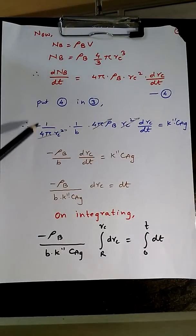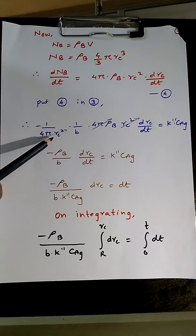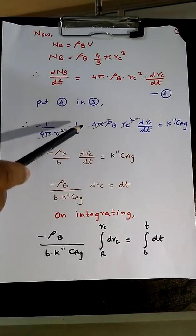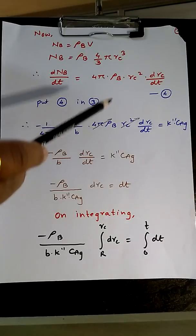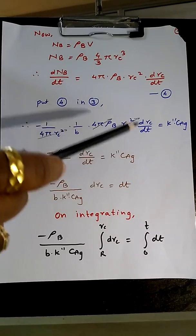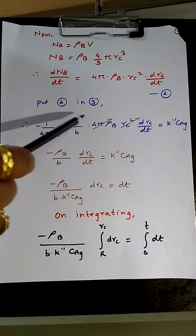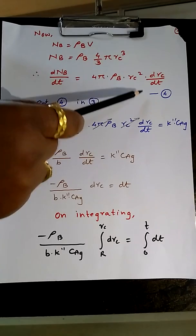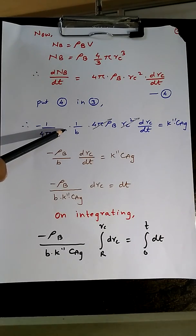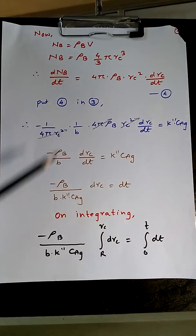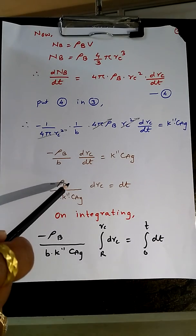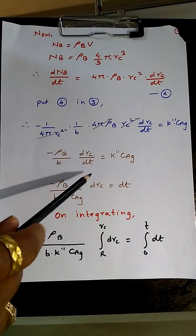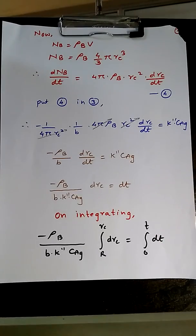So our equation will become -1/(4πR²) × 1/b × 4πρB Rc² dRc/dt which is k'' CAG. That is a modification in 3 when you substitute equation 4 in 3. So 4πRc² cancels out, and thus you get -ρB/b dRc/dt = k'' CAG.